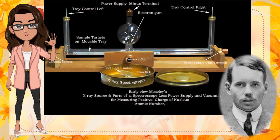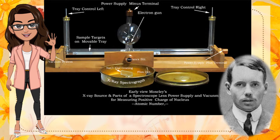In 1913, Moseley published a paper on the arrangement of the elements in the periodic table based on their atomic numbers. He used X-ray spectroscopy to determine the atomic number of an element. He bombarded a beam of electrons to different elements and measured their X-ray spectral lines. His results clearly showed that the frequency of the X-rays given off by an element was mathematically related to the position of that element in the periodic table.